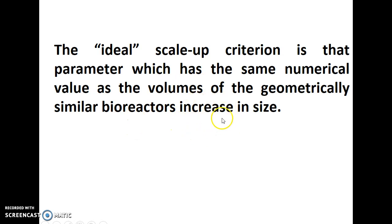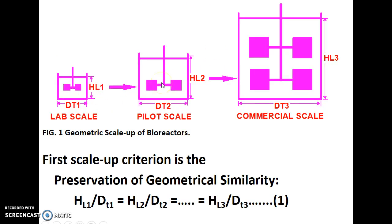The condition here is that the reactors, whether at lab scale, pilot scale, or commercial scale, should be geometrically similar in size. By geometric similarity, we mean that the H/D ratio of all the reactor systems must be the same or remain constant. So HL1/DT1 should equal HL2/DT2, which should equal HL3/DT3, and so on, where HL and DT represent height and diameter of the reactor at each respective scale.